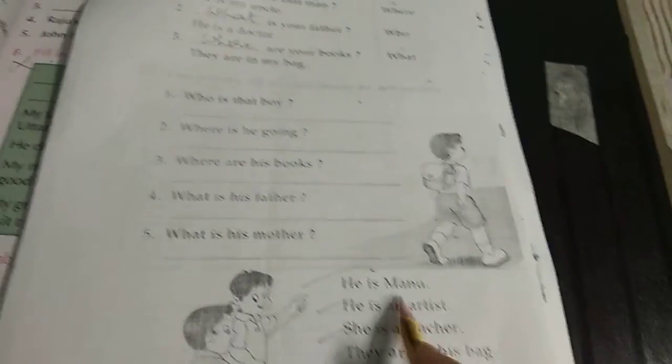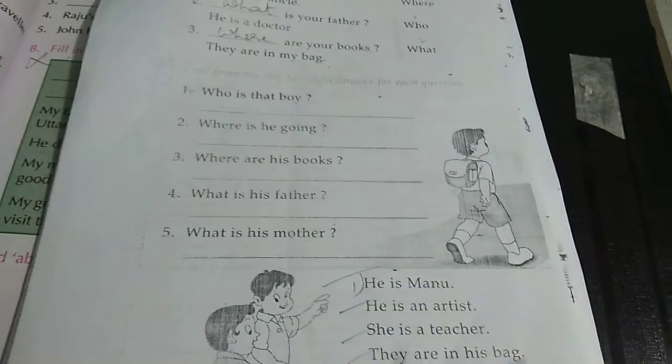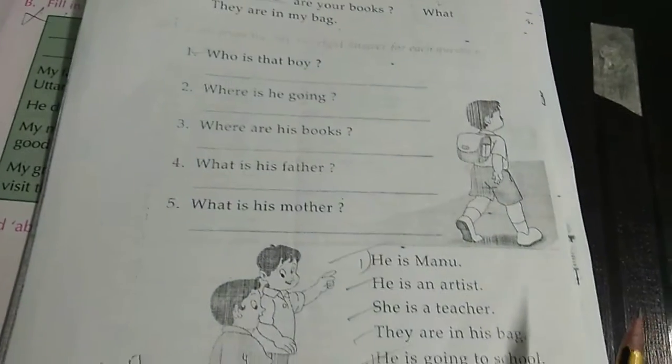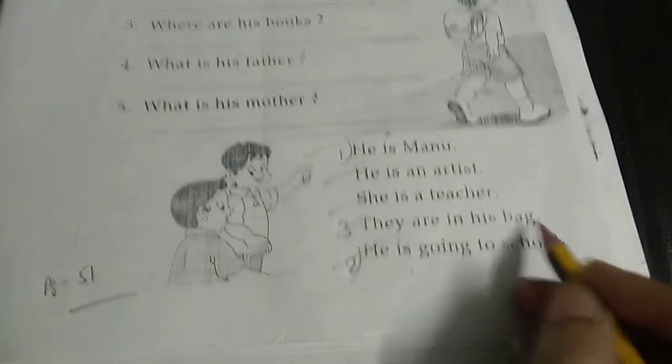Who is that boy? Who is that boy, he is Manu. Number 1. Where is he going? He is going, number 2, he is going to school. Where are his books? Number 3, they are in the bag.